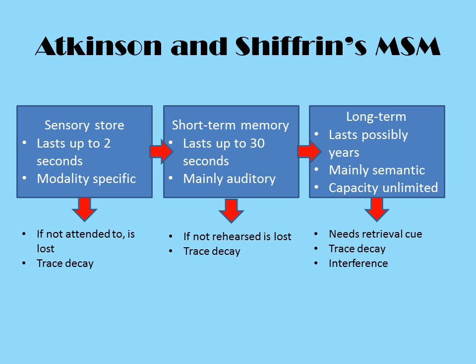Atkinson and Schifrin's multi-store model of memory is quite basic in that it suggests memory is made up of three stores, and that memory works in a linear format, as shown in the flow diagram on screen.